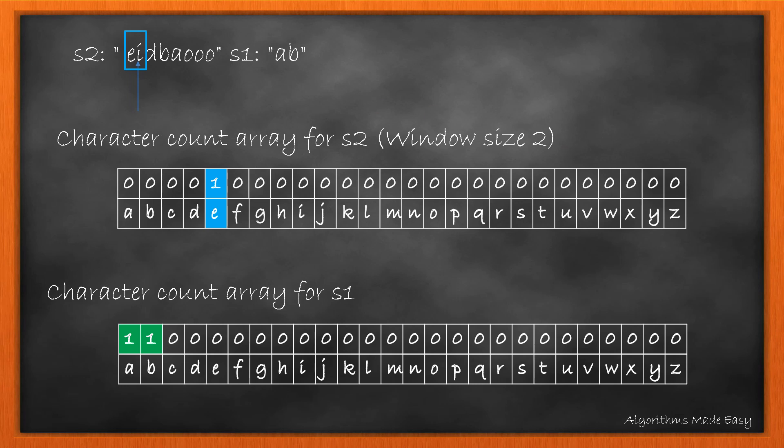Now we will start iterating one character at a time to form a sliding window same as the size of S1. While iterating, first we increment the count of character at current index. Now we have the count of all the characters of the window in the array for S2. So we compare both these arrays to see if they are equal. As we can see they are not.